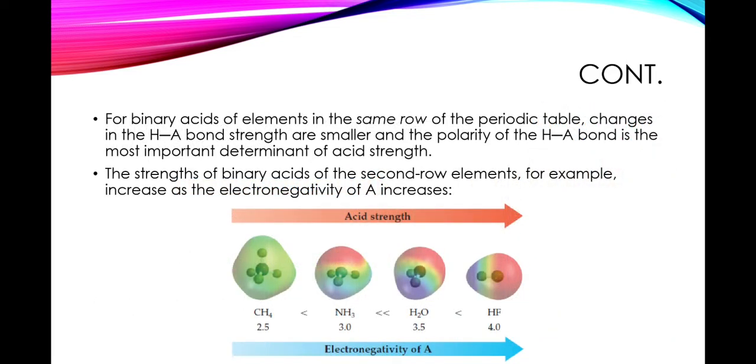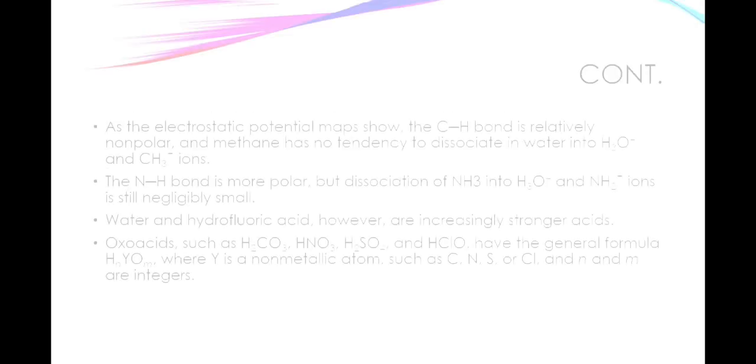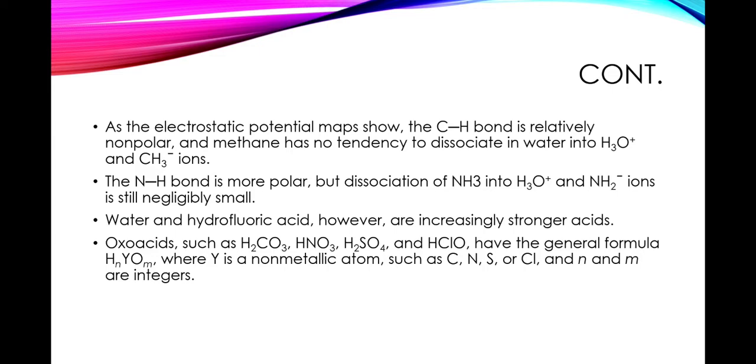Next, for binary acids of elements in the same row of the periodic table, changes in the H-A bond strength are smaller and the polarity of the H-A bond is the most important determinant of acid strength. The strength of binary acids of the second-row elements, for example, increases as the electronegativity of A increases, that is from left to right.